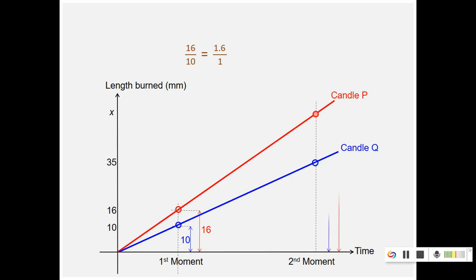Now, let's connect this to algebra then. So what we have been doing is just for one specific case, 16 over 10 equals to X over 35. We can use this proportion to solve for X. This is in the middle school when they learn proportion. But in algebra, the relationship between the burnt length of candle P, which we represented by P, and the burnt length of Q, it can be at any point in time.